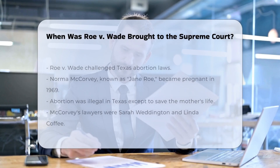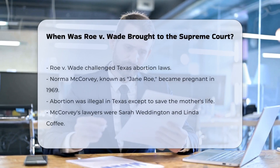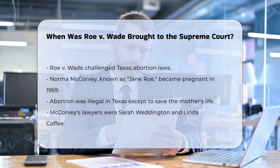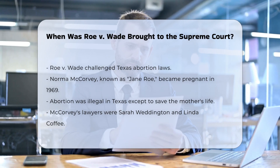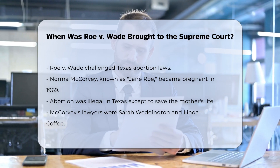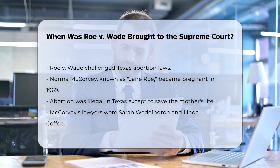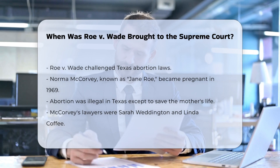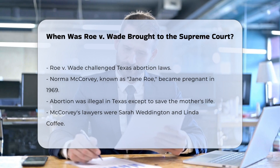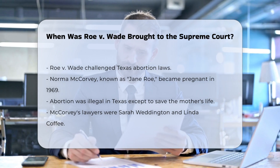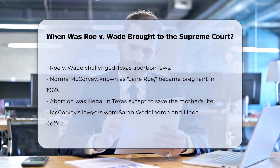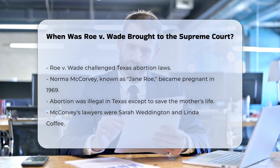The case of Roe v. Wade originated from a challenge to the abortion laws in Texas. In 1969, Norma McCorvey, under the pseudonym Jane Roe, became pregnant with her third child and sought an abortion, which was illegal in Texas, except to save the mother's life.